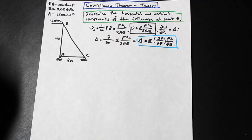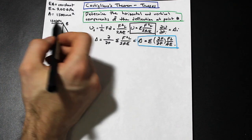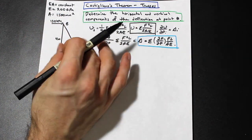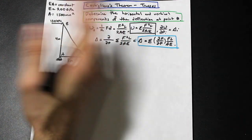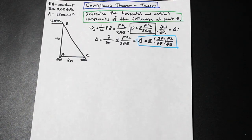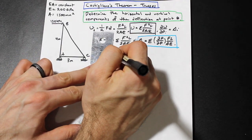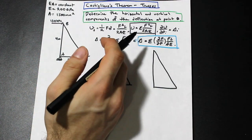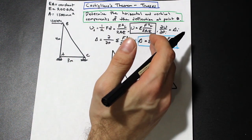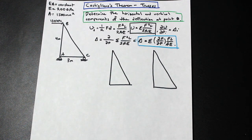Let's head over to the problem. The first thing we're going to do is apply our load P. We're going to draw two trusses and do a kind of superposition: for the left truss we find the horizontal deflection, for the right truss the vertical deflection, and we add them together — all at once — which saves us a bit of time.